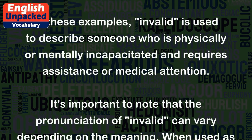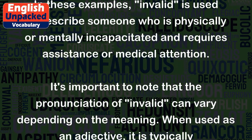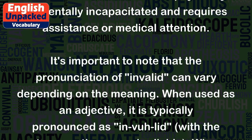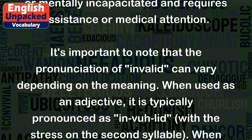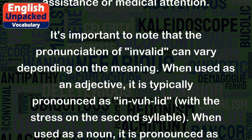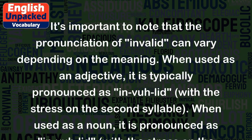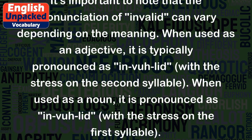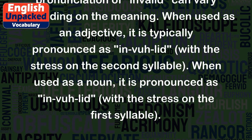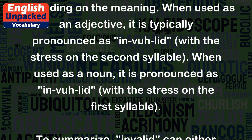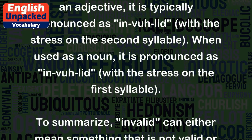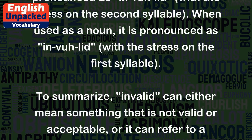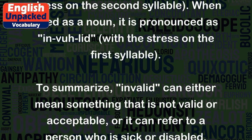It's important to note that the pronunciation of 'invalid' can vary depending on the meaning. When used as an adjective, it is typically pronounced as 'invalid', with the stress on the second syllable. When used as a noun, it is pronounced as 'invalid', with the stress on the first syllable.